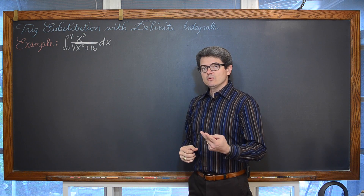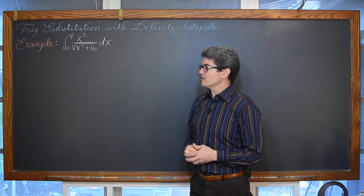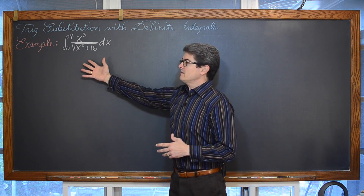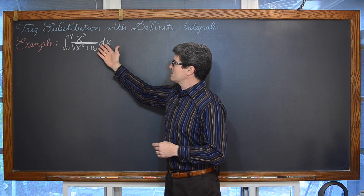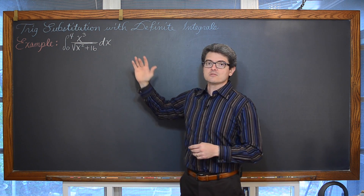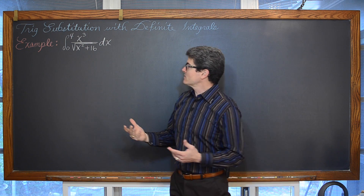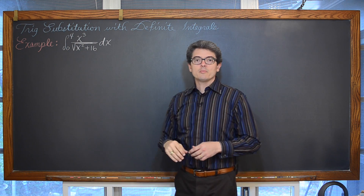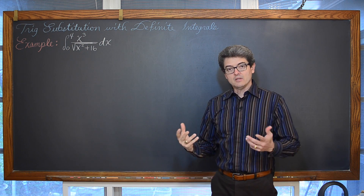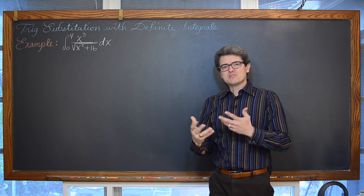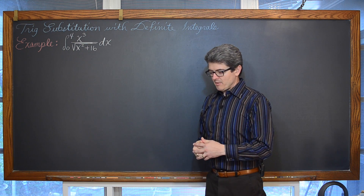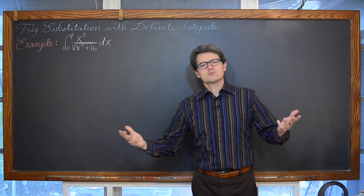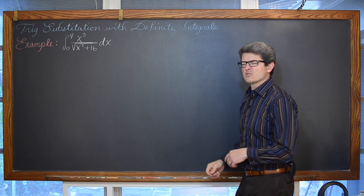The second way of working this problem out is we are not going to go off to the side and write an indefinite integral. When we get done with our trigonometric substitution, we are going to remove all references of x and put in references of theta. I can't write a definite integral with references of theta using the same lower and upper limits of 0 and 4 because those are in terms of x. So the second way, we are going to put those lower and upper limits also in terms of theta and finish the problem that way. We will have the same answer regardless.